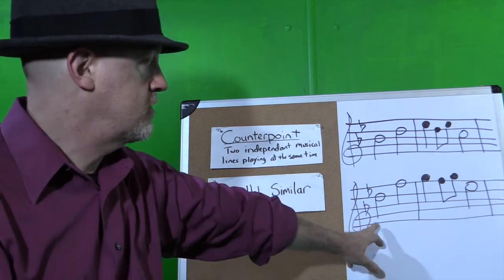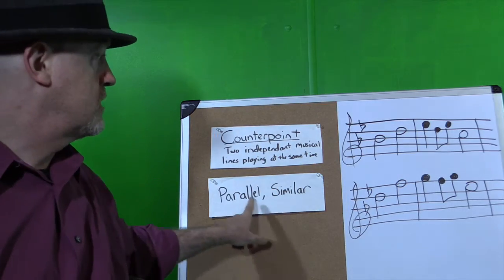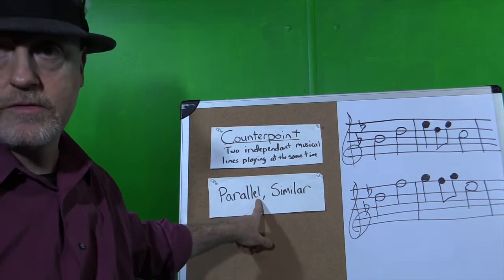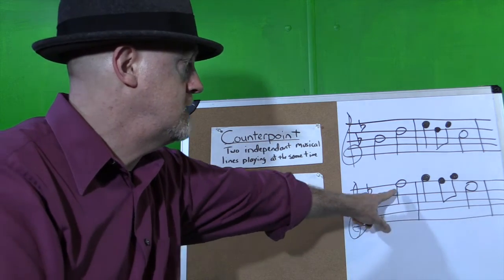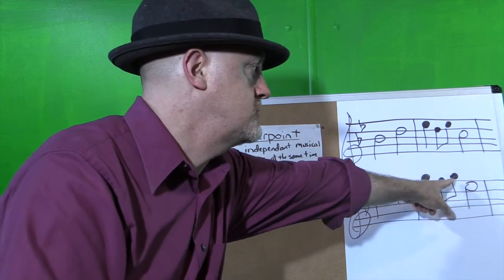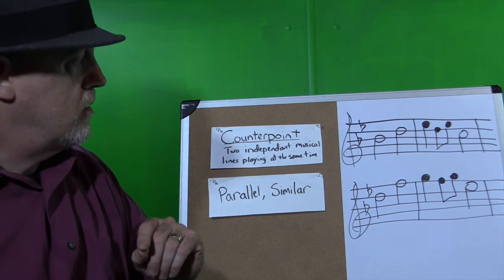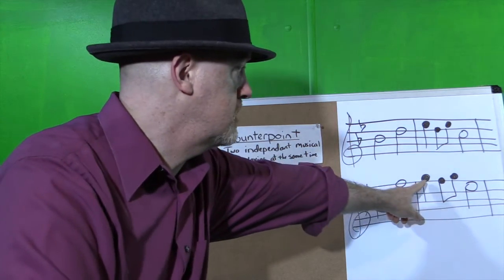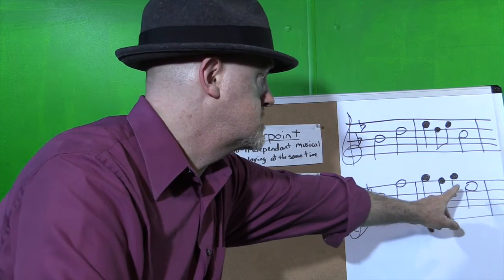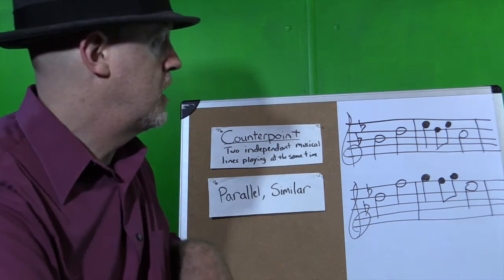Now this line is a counterpoint line that's moving parallel to this line. This line starts on D, goes up to F, G, F, G, E flat. Now if we think about that line in numbers, it's 3, 5, 6, 5, 6, 4.